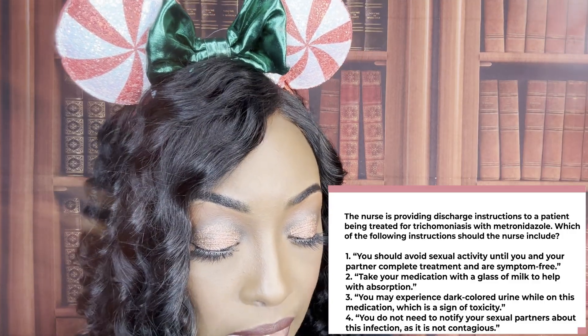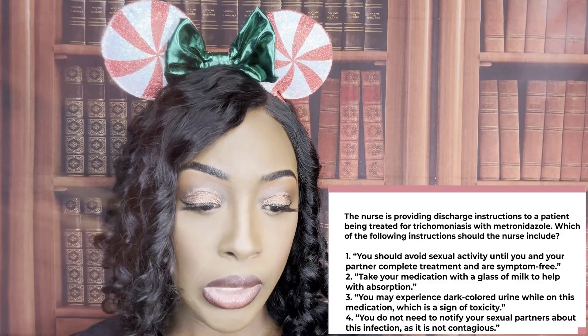The nurse is providing discharge instructions to a patient being treated for trich with Flagyl (metronidazole). Which of the following instructions should the nurse include? One: you should avoid sexual activity until you and your partner have completed treatment and are symptom-free. Two: take your medication with a glass of milk to help with absorption. Three: you may experience dark-colored urine while on this medication, which is a sign of toxicity. Or four: you do not need to notify your sexual partners about this infection as it is not contagious. The correct answer is one — avoid sexual activity until you and your partner have completed treatment and are symptom-free. Both of those conditions.